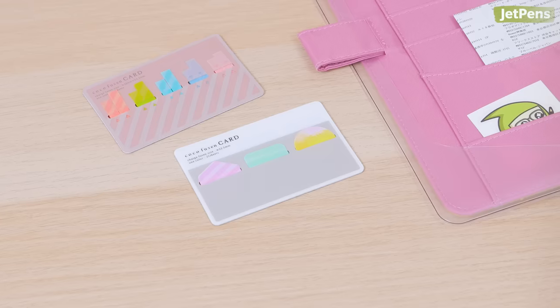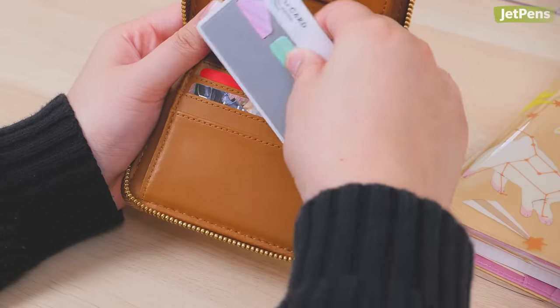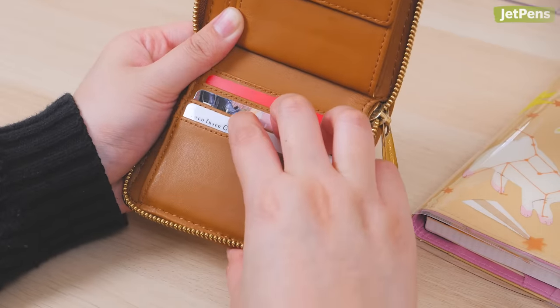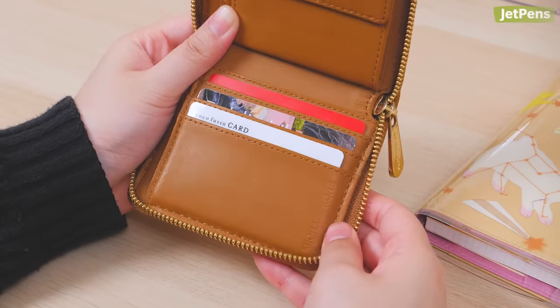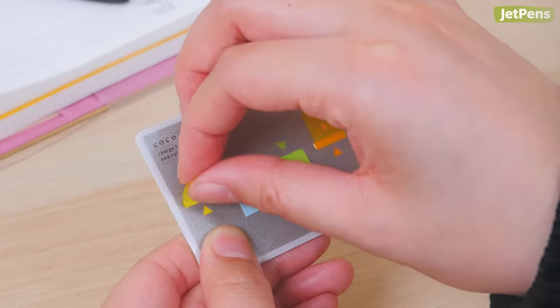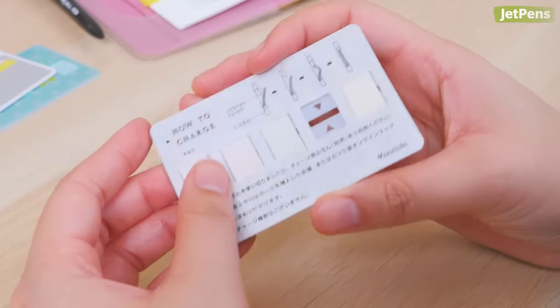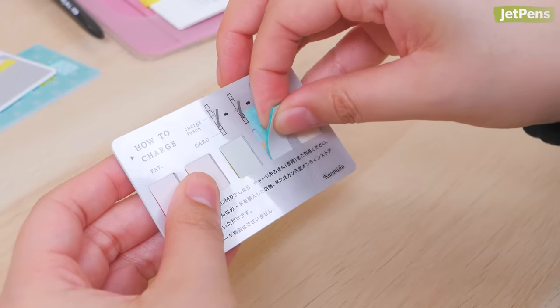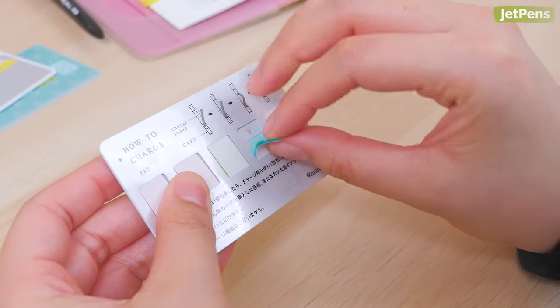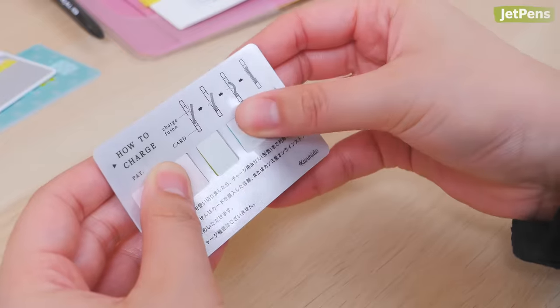Have you ever used refillable sticky notes? Kanmido Koko Fusen sticky notes are housed in a holder the size of a credit card, so it slips perfectly into a wallet or pocket. The sturdy card has slots for each stack of sticky notes and lets you pull out just one at a time. To refill the card, just flip the card over and insert a new stack of sticky notes into the bottom of the slot. Pull the top sticky tab through the front-facing opening, then gently bend the rest of the sticky notes to fit inside the hole.